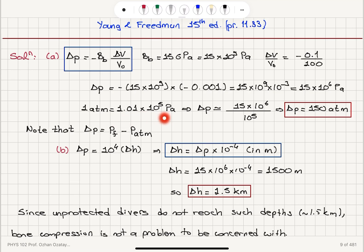We find that the pressure increase should be 15 times 10 to 6 Pascals or 15 megapascals. And since one atmosphere is roughly 1 times 10 to 5 Pascals, we obtain 150 atmospheres of pressure change. So the final pressure will be 151 atmospheres.